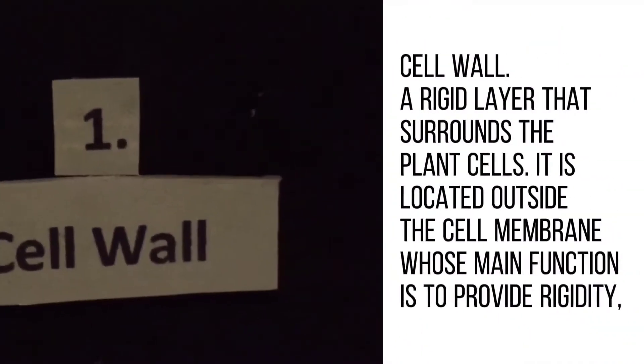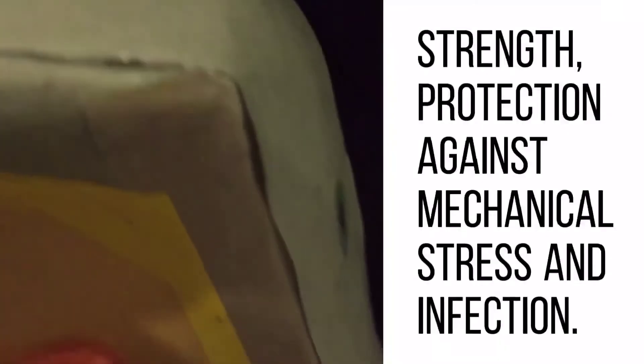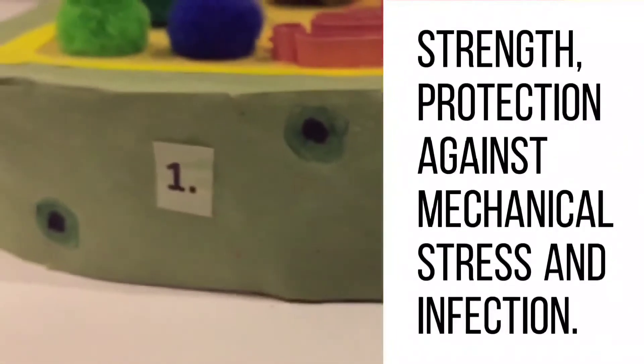Cell wall is a rigid layer that surrounds the plant cell. It is located outside the cell membrane, whose main function is to provide rigidity, strength, protection against mechanical stress, and infection.